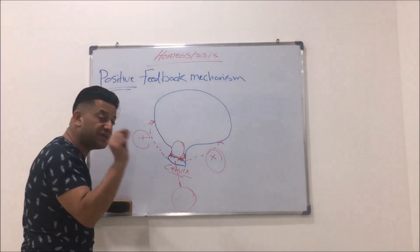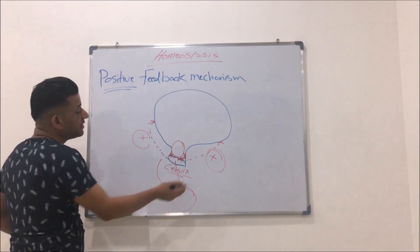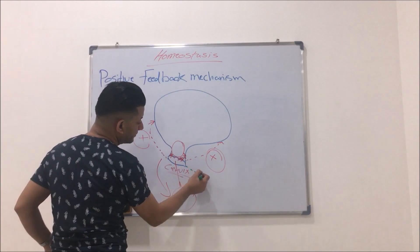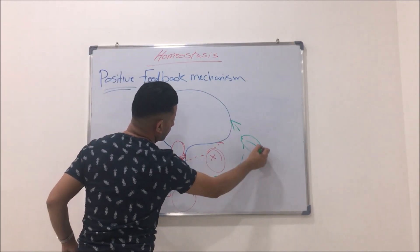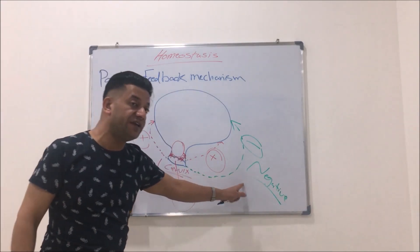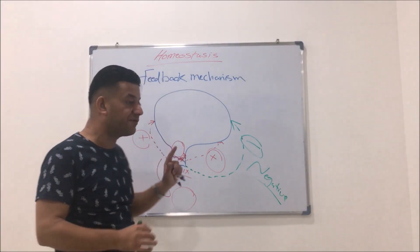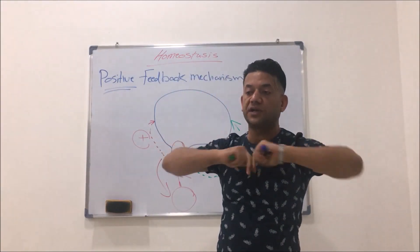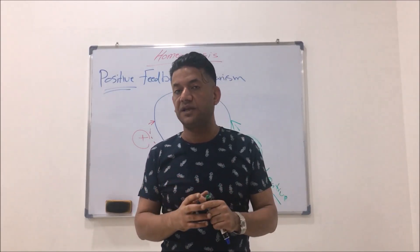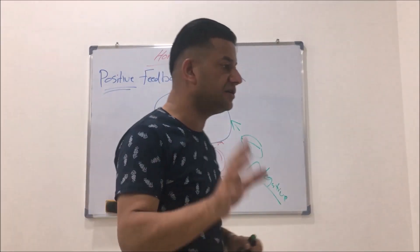As soon as the baby is delivered, there will be action of negative feedback, because without negative feedback the excessive contractions caused by positive feedback would cause rupture of the uterine wall. So this covers the explanation of all topics in our lecture today. Thank you so much for listening. I'll see you in the next lecture.